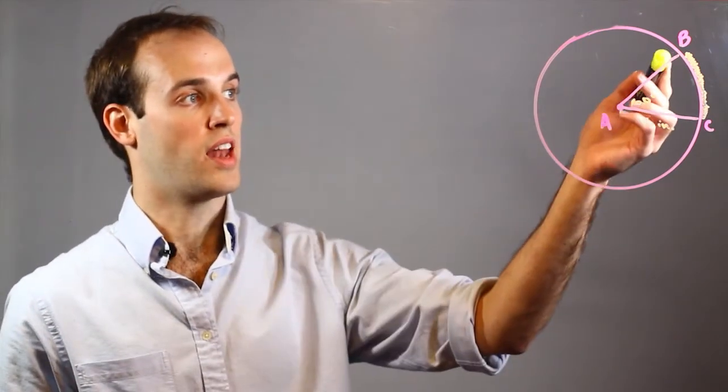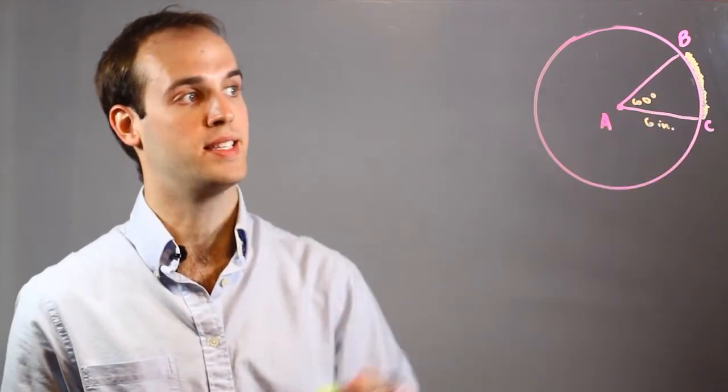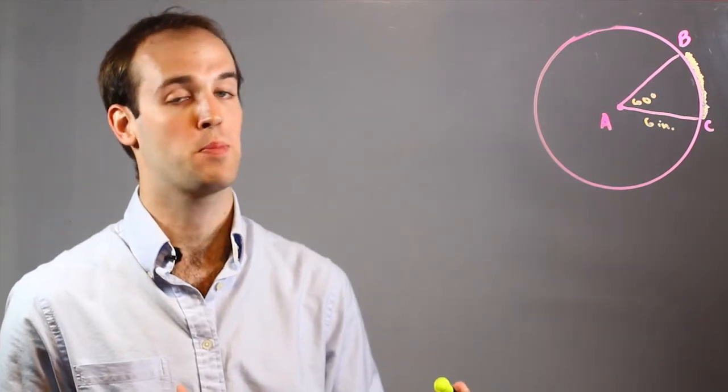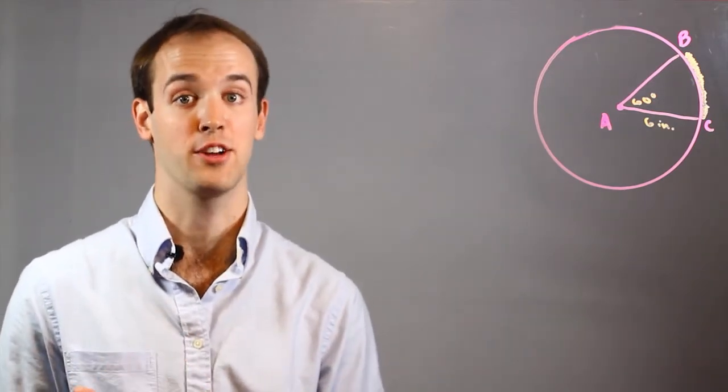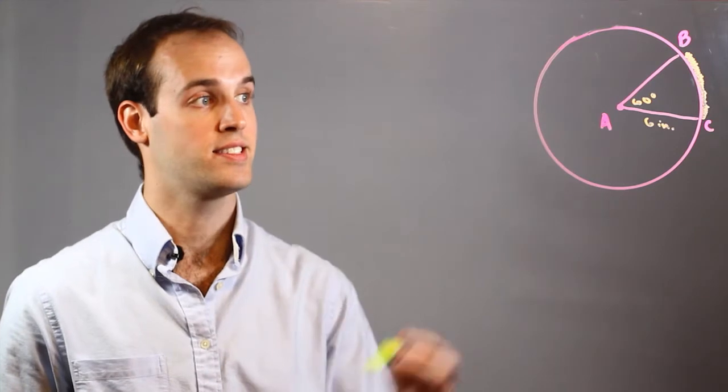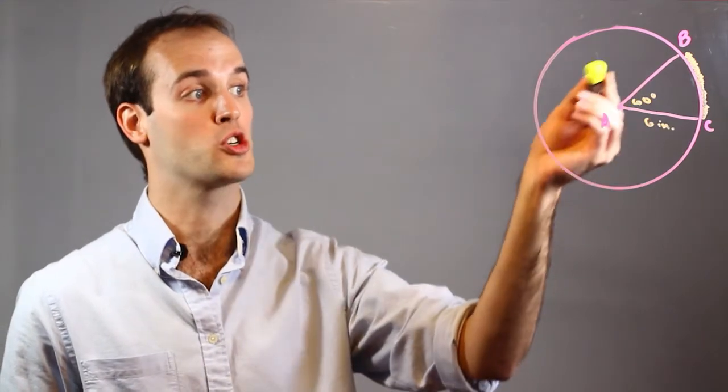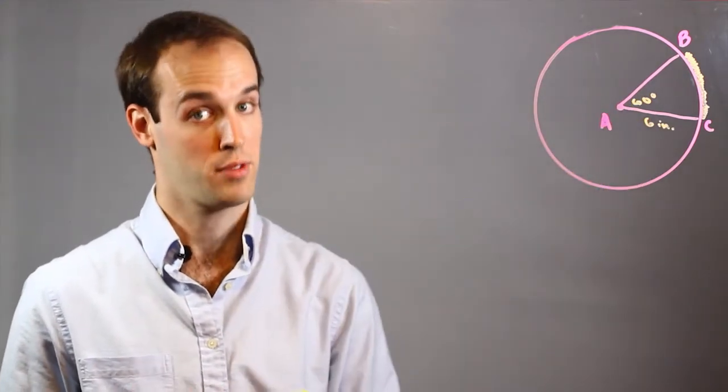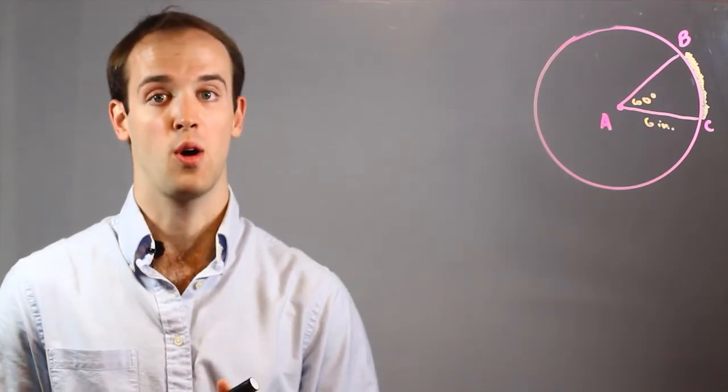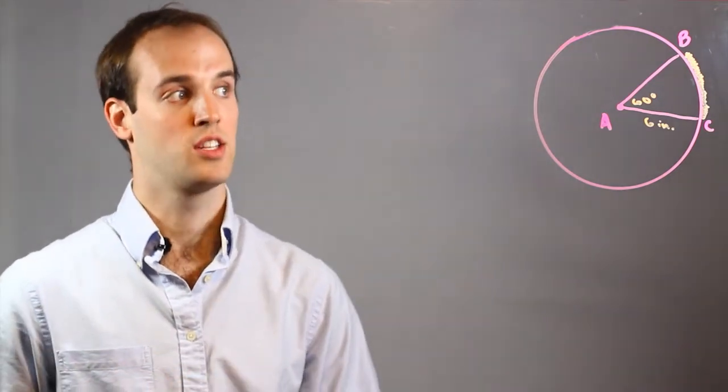Since I know that I want to find out how long BC is, I know it must be a portion of the entire circumference, just as 60 degrees is a portion of the whole circle, 360 degrees. So, I can set up a proportion to solve for x.